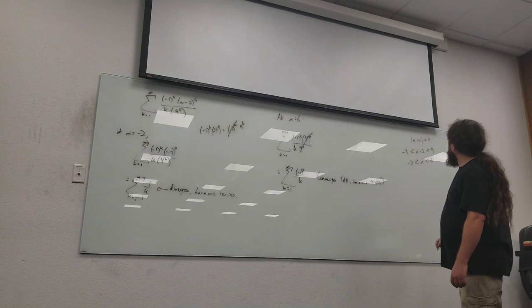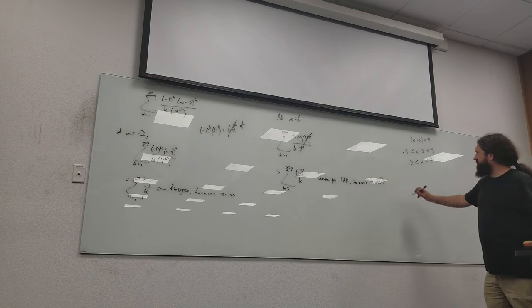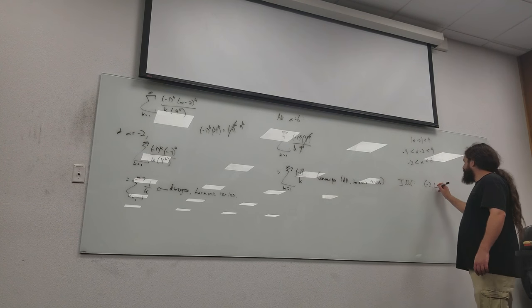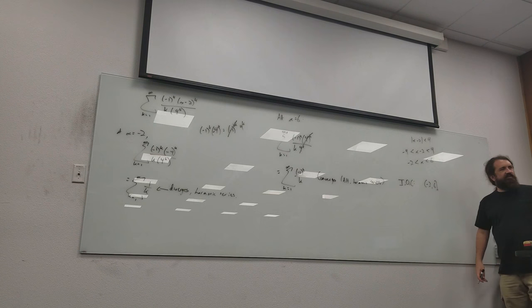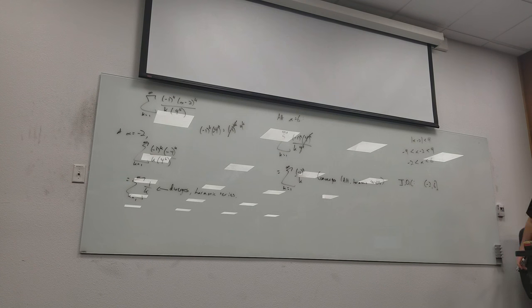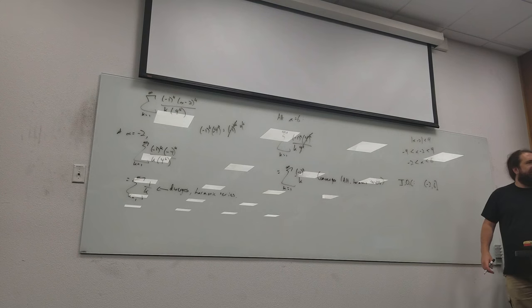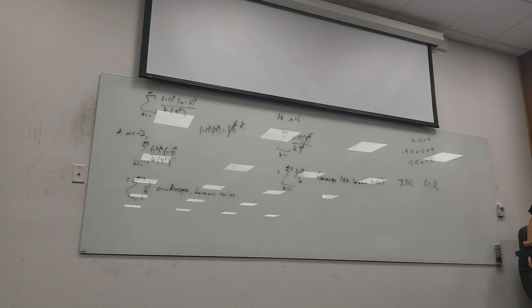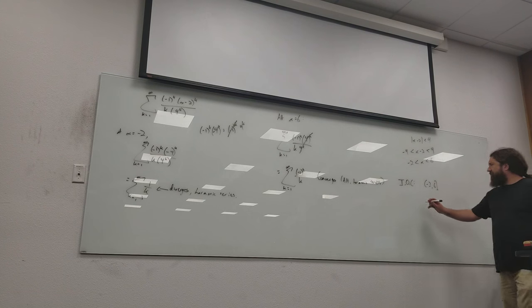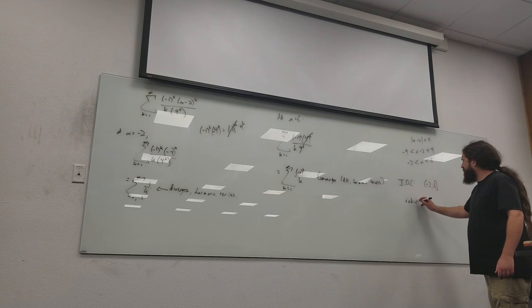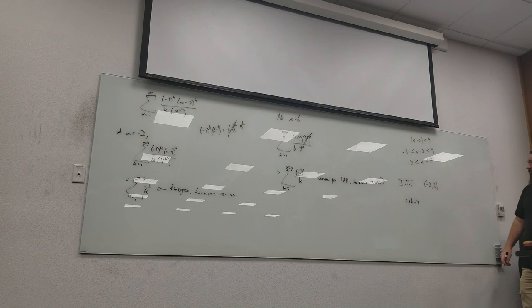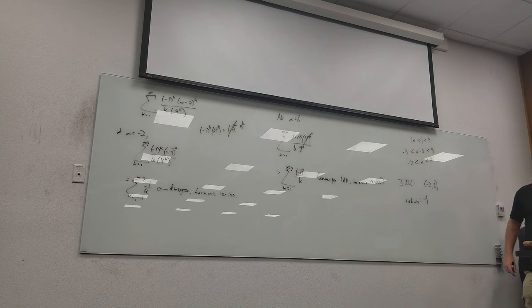So, what does that mean our interval of convergence is? Negative 2 to 6, but with a parentheses on the negative 2 and a bracket on the 6. Because it works on 6, but not on negative 2. Does that make sense? So, the radius of convergence. The difference on the direction. Yeah. So, the length of this interval is 8, right? So, your radius of convergence has got to be 4. It's half of the distance.